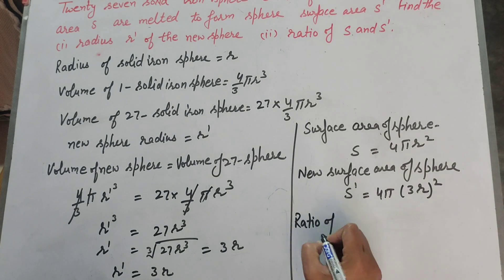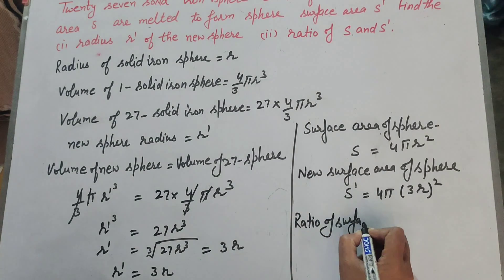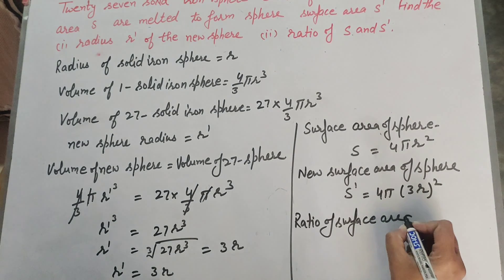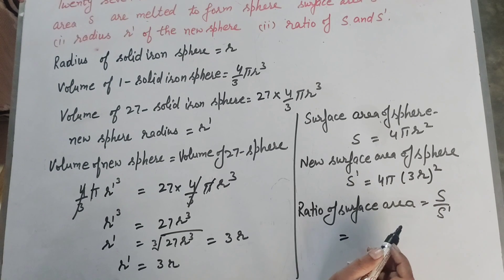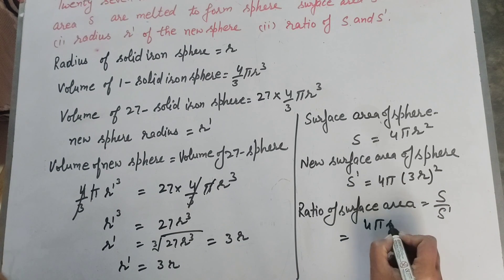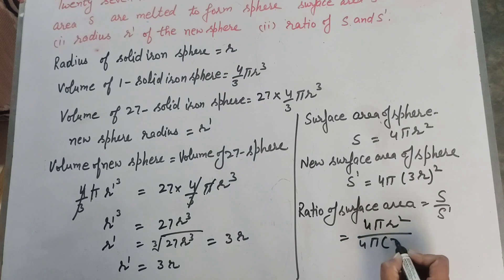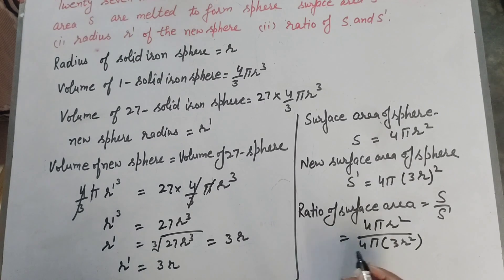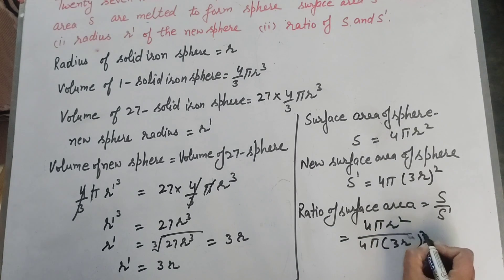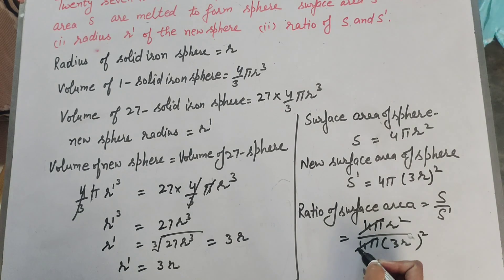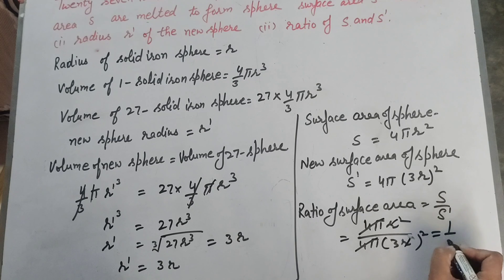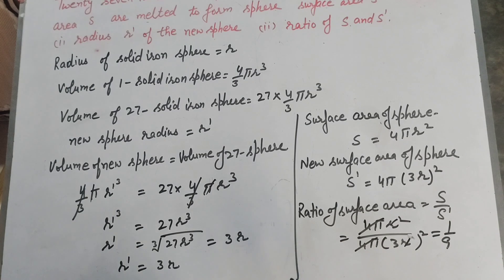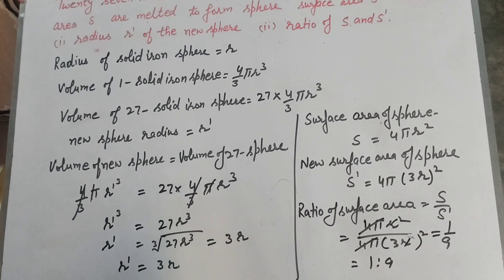So ratio of surface area: s over s' equals 4 π r² over 4 π (3r)². The 4 π cancels on both sides, and r² in numerator and denominator both cancel. So it is 1 over 9. So the ratio of surface areas s : s' equals 1 : 9.